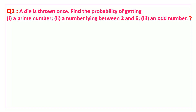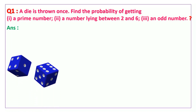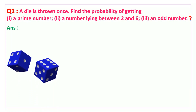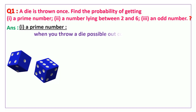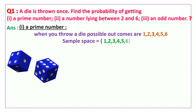Let us calculate first getting a prime number on the top face. When you threw a die, the possible outcomes are 1, 2, 3, 4, 5, 6. So the sample space is equal to {1, 2, 3, 4, 5, 6}. Therefore n of s is equal to 6.